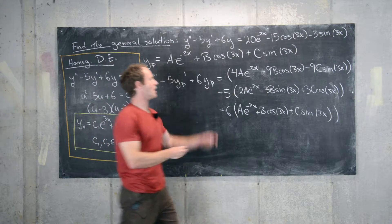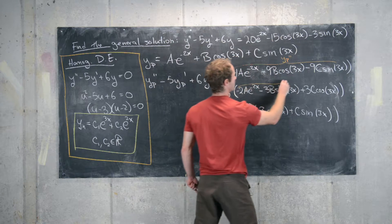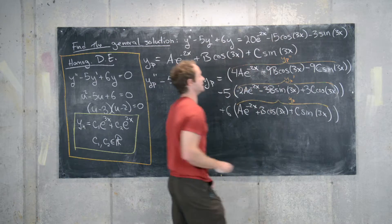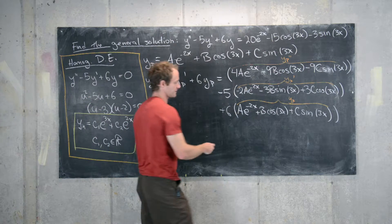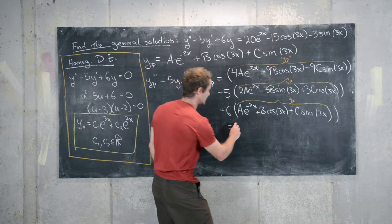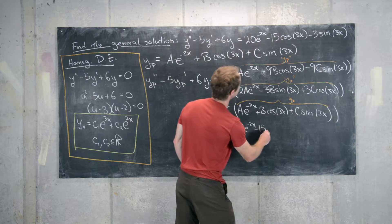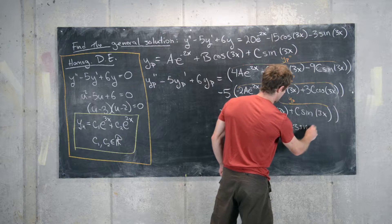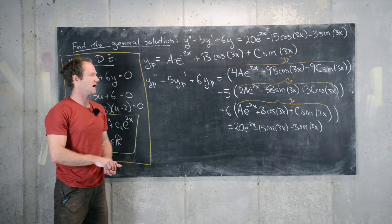To reiterate: the top group is yp double prime, the middle group is yp prime, and the bottom group is yp. We want this entire expression to equal the right-hand side: 20 e to the minus 2x minus 15 cosine 3x minus 3 sine 3x.